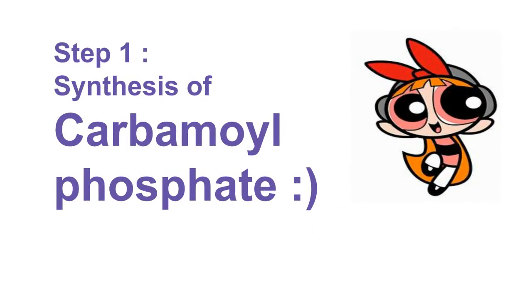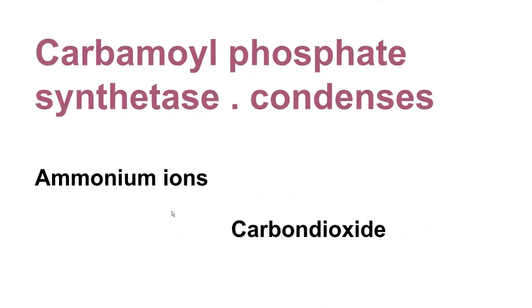Step 1 is the synthesis of carbamoyl phosphate. The enzyme used is carbamoyl phosphate synthetase, located in the mitochondria. It catalyzes the condensation of ammonium ions with carbon dioxide to form carbamoyl phosphate. This step consumes two ATP.